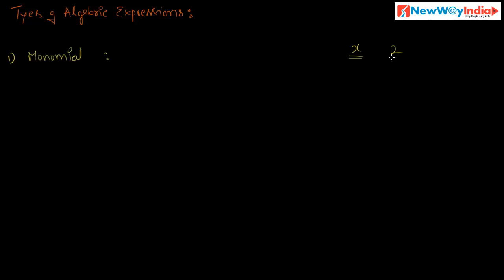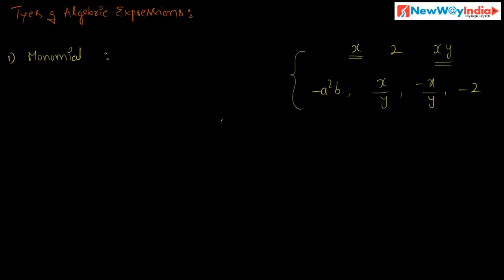For example, 2 is a constant term, xy is also a term, x divided by y is also a term, minus x by y is also a term, minus 2 is also a term, and minus a squared b is also a term. These are all different examples of monomials.